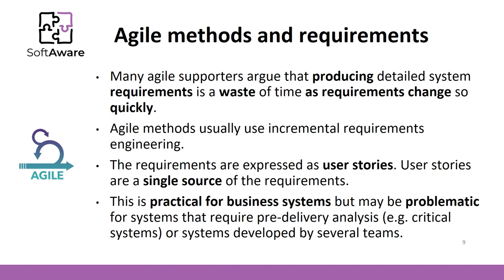Now, what about Agile? As you may already know, in Agile there are no such things as user or system requirements. Many Agile supporters argue that producing detailed system requirements is a waste of time, as requirements change so quickly. They state that there can only be one source of requirements — so-called user stories. The question is whether this is good or not. In practice, it is good for business systems. However, it might be problematic for systems that require pre-delivery analysis, for example critical systems, or systems developed by several teams.